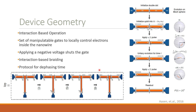We can also see how this geometry allows for braiding operations. By opening this gate, the two goes down here, which allows the three to float across, and by once more opening this gate, the two goes back. Effectively, the two and three states have been interchanged, which is a braid.